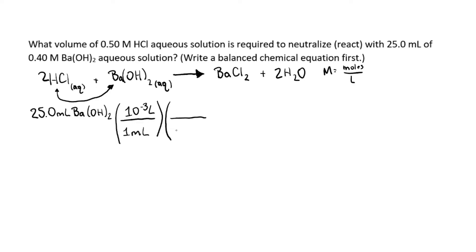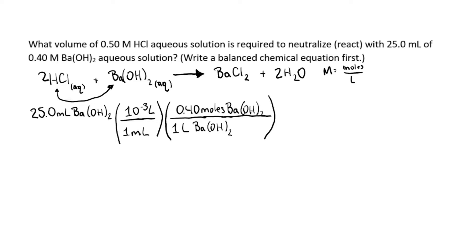Now that we're in liters, we use the molarity as a conversion factor: for every one liter of barium hydroxide, we get 0.40 moles of barium hydroxide. Now that we're in moles of barium hydroxide, we use our balanced equation and look at the two coefficients of the reactants. For every one mole of barium hydroxide, we get two moles of hydrochloric acid.